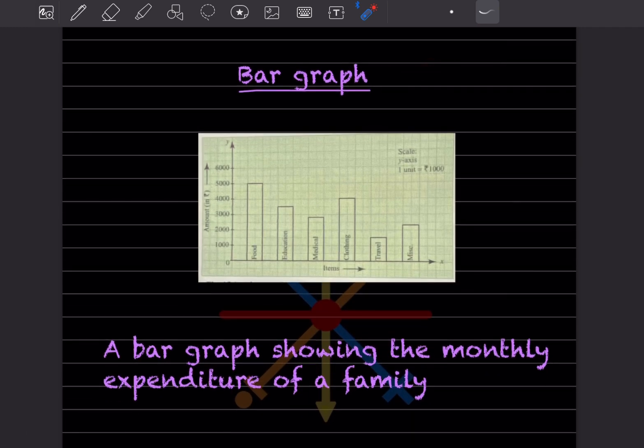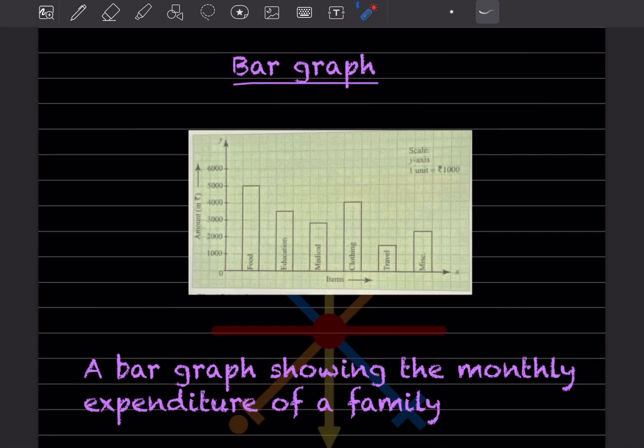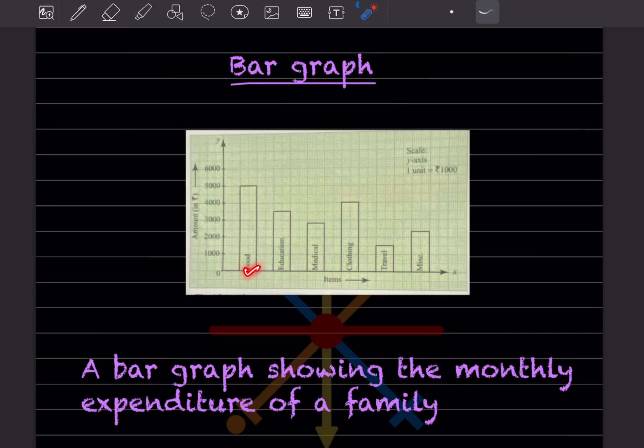For the bar graph, it should look like this. What happens here - it shows the monthly expenditure of a family. You can see here: food, education, medical, clothing, travel, and miscellaneous. This bar graph is showing the monthly expenditure of a family.